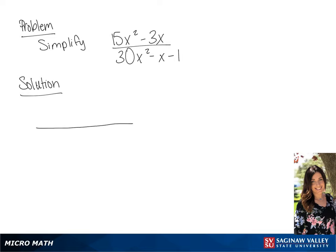We are going to simplify this. First, we're going to factor the numerator, and we're going to get 3x times 5x minus 1. Now we're going to factor the denominator, and we will get 5x minus 1 times 6x plus 1.